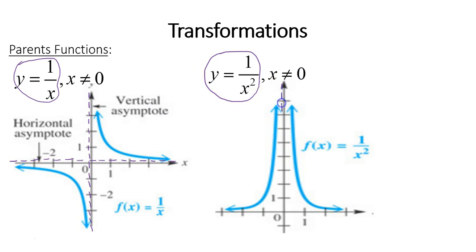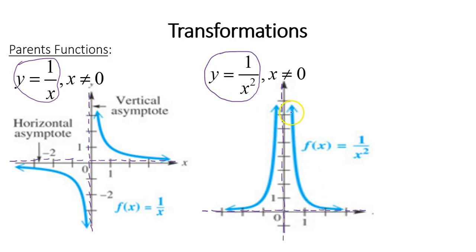For 1 over x squared, you still have a vertical asymptote as the y-axis and a horizontal asymptote as the x-axis. Notice the asymptotes intersect at the origin, 0, 0. Since 1 over x squared is always a positive value for y, we have a curve in the top right region and a curve in the top left region. Once again, the curves get close to the asymptotes but never actually touch them.